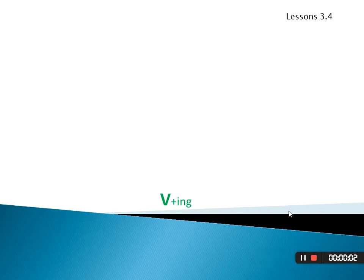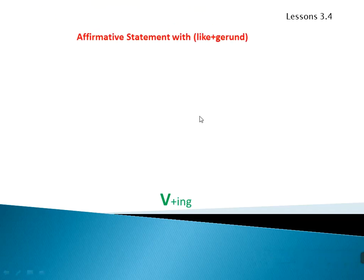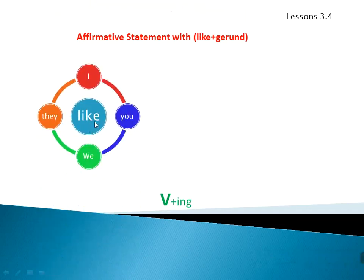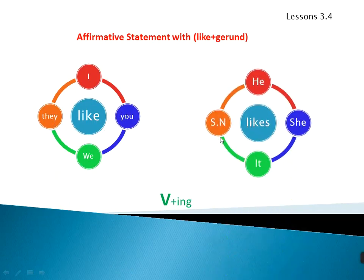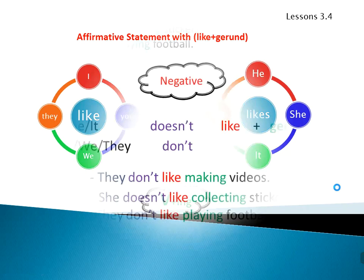Let's start grammar lessons three and four: affirmative statements with 'like' and 'likes' plus gerund. With 'I', 'you', 'we', and plural nouns, we use 'like'. With 'he', 'she', 'it', and singular nouns, we use 'likes'. After 'like' and 'likes', we use a gerund — that is, any verb plus '-ing'.